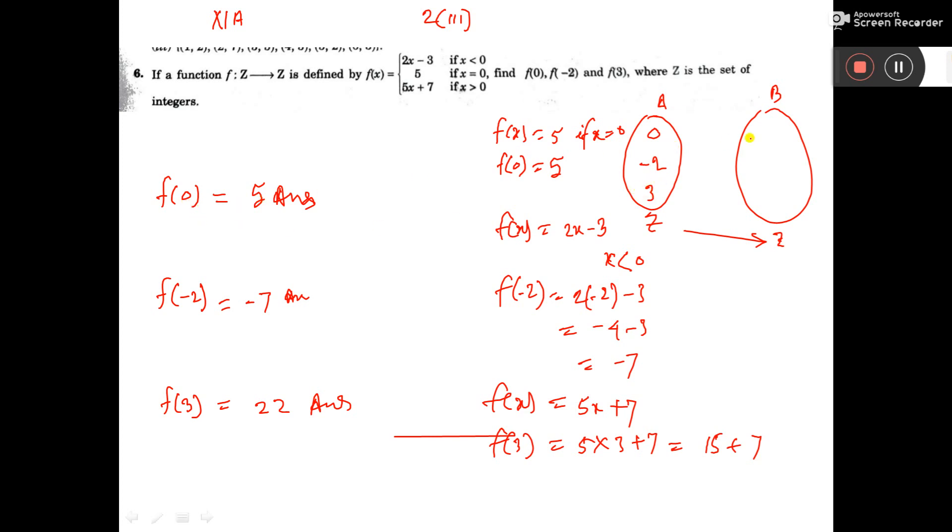When 0, then we have got 5. When -2, then we have got -7. When 3, then 22. So here, 0 is related to 5, -2 is related to -7, and 3 is related to 22. That's all.